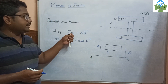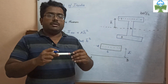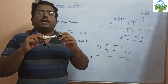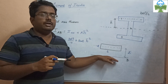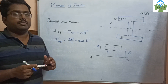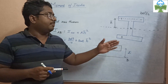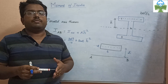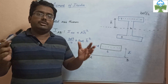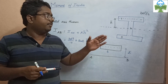So here, if Ixx is bd³ by 12, that is the Ixx value about the centroid axis. Using the parallel axis theorem, we can solve composite sections for their moment of inertia. A composite section can be made up of rectangles, triangles, and circles. We can apply the moment of inertia formulas and the composite section method.